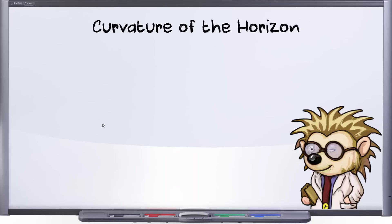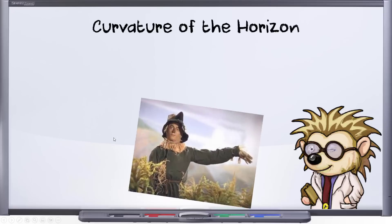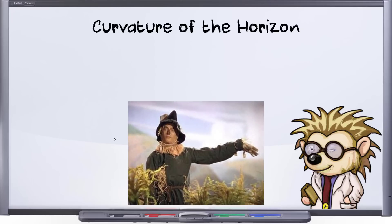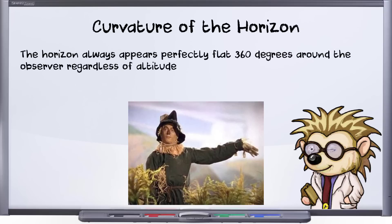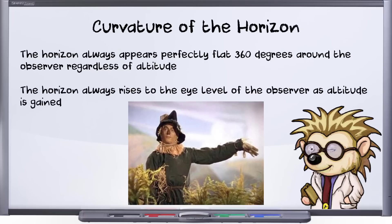Let's start off with the initial claim. And before anyone claims that I'm strawmanning the argument, I'll play the audio directly from Eric Dubay as he makes them. The horizon always appears perfectly flat 360 degrees around the observer regardless of altitude. The horizon always rises to the eye level of the observer as altitude is gained. Eric Dubay says, but is he correct?